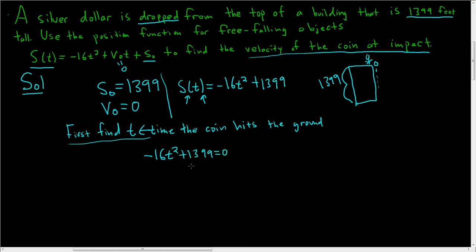To solve this for t, we'll subtract 1399. So we have negative 16t squared equals negative 1399, and divide by 16, that gives us t squared is equal to 1399 divided by 16. Take the square root of both sides. So we do get a plus or minus, but the minus is irrelevant because time can't be negative. So we end up with the square root of 1399 divided by 4.